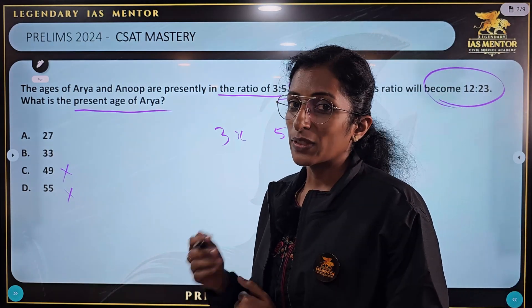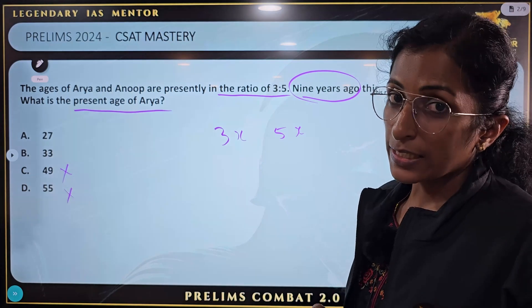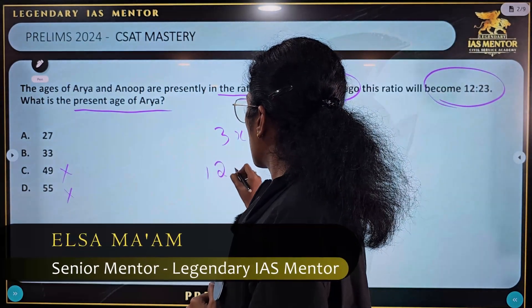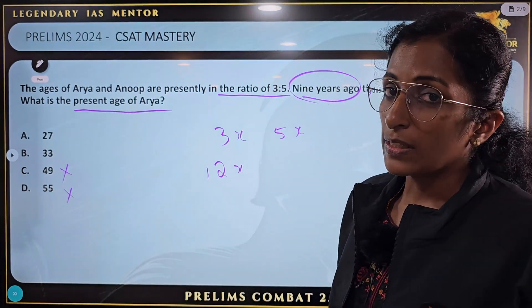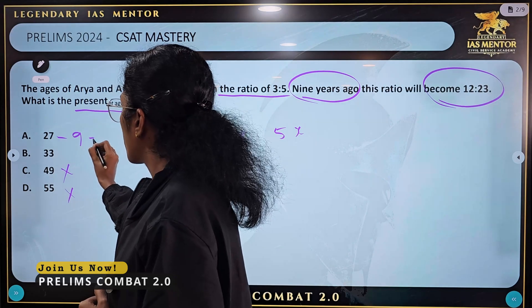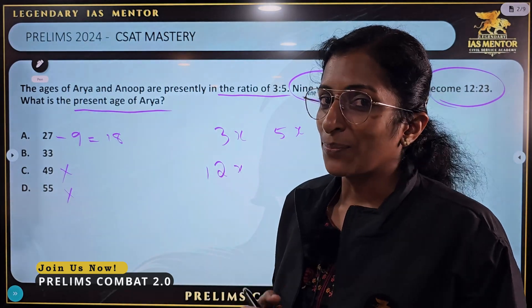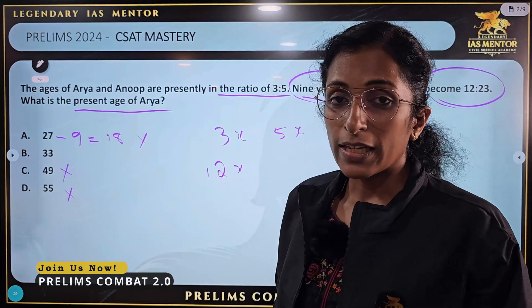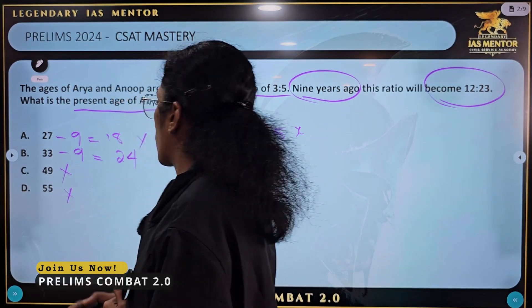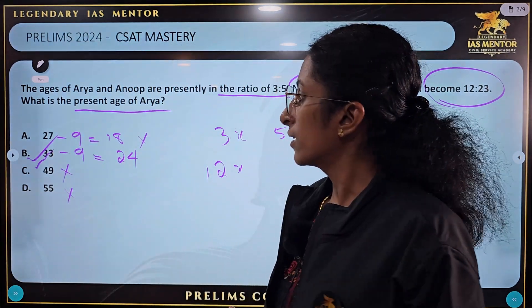27 and 33 are both multiples of 3. For option A, if Arya's age is 27, then 27 minus 9 gives 18. Checking against 12 — this does not satisfy the ratio condition. Moving to option B, 33 minus 9 gives 24. The answer is B. The answer is 33.